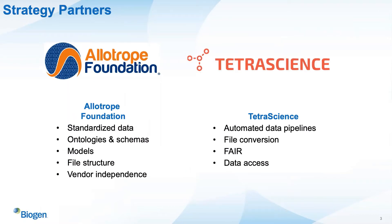So how we will achieve this strategy is through two key partnerships. The first partnership is the Allotrope Foundation. Allotrope is providing standardized data models, data ontologies and schemas, a file structure through the ADF, and when you combine all of these together, it gives you vendor independence.